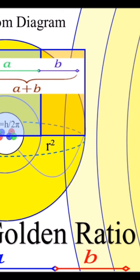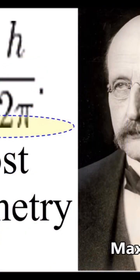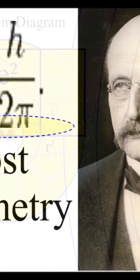This forms a constant of action known as the Planck constant, linked to 2pi, representing the geometry.